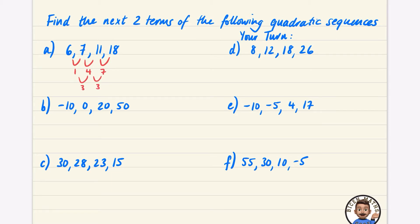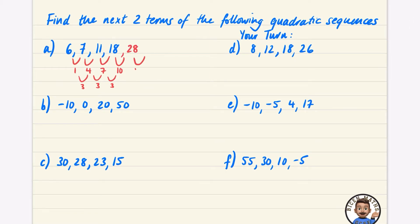I need the next one to make it go to ten because to go from seven to ten is going up three. So the next number is going to be 28, and then I need it to go up by 13 because between 10 and 13 it's going up by three. So 28 plus 33 is 41. So the next two terms in this quadratic sequence are 28 and 41.